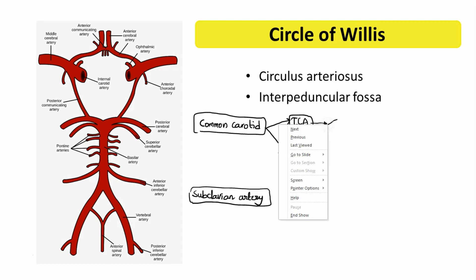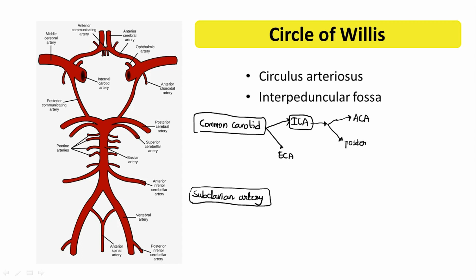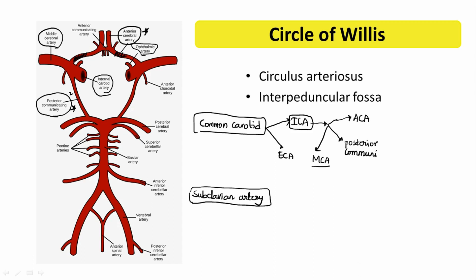The internal carotid artery, after entry into the brain, divides into the anterior cerebral artery, posterior communicating artery, and middle cerebral artery. You can see here the internal carotid artery; one branch is the ophthalmic artery, which is not important for our discussion. The second branch is the posterior communicating artery, and the middle cerebral artery is the major branch. Both the anterior cerebral artery and the posterior communicating artery take part in the formation of the circle of Willis.